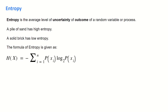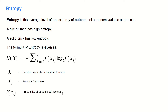A solid brick, perhaps one that doesn't break when I drop it, has low entropy — it might be slightly easier to predict where that would go. The formula for entropy is given as follows. Big X represents a random variable or random process, for example dropping a pile of sand. XI are the possible outcomes, and P(XI) is the probability of possible outcome XI. A case where we have all data points belonging to the same class has an entropy of zero — if you were to mix these points around or rotate them, the outcome would always be the same, so the entropy is zero.